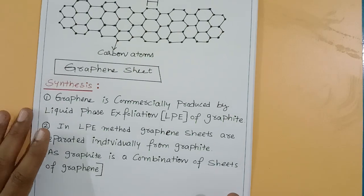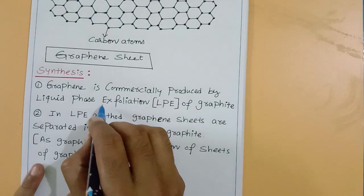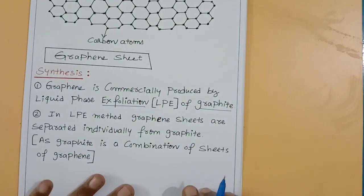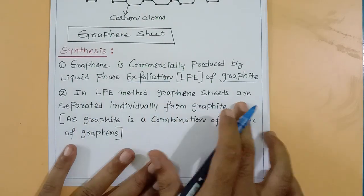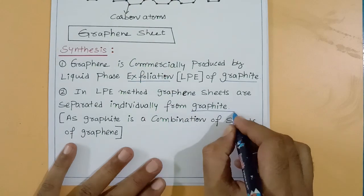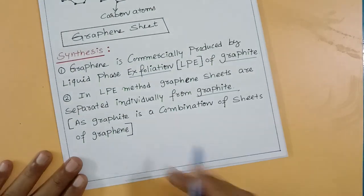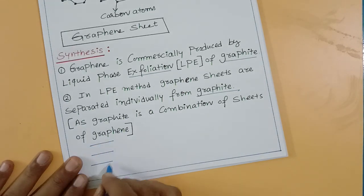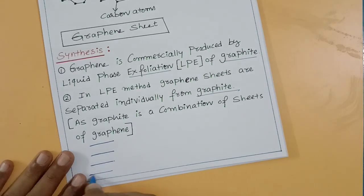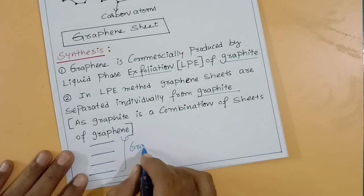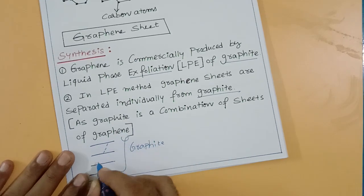Synthesis: graphene is synthesized commercially by liquid phase exfoliation of graphite. In the liquid phase exfoliation method, graphene sheets are separated individually from graphite. Graphite is a combination of various graphene sheets arranged in the same way. Each sheet is held together by van der Waals forces of attraction.